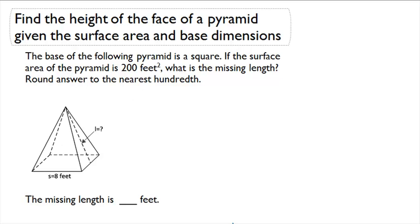The base of the following pyramid is a square. If the surface area of the pyramid is 200 square feet, what is the missing length? Round your answer to the nearest hundredth.